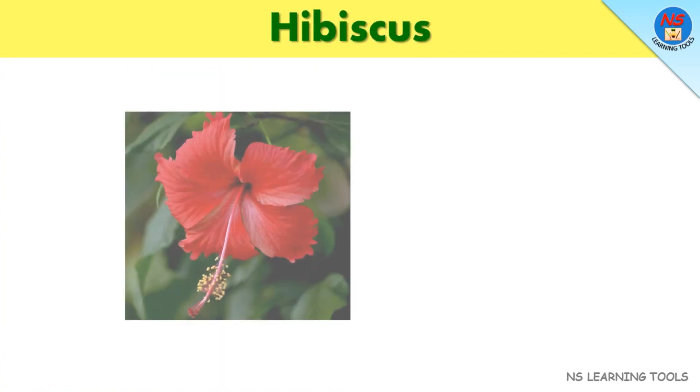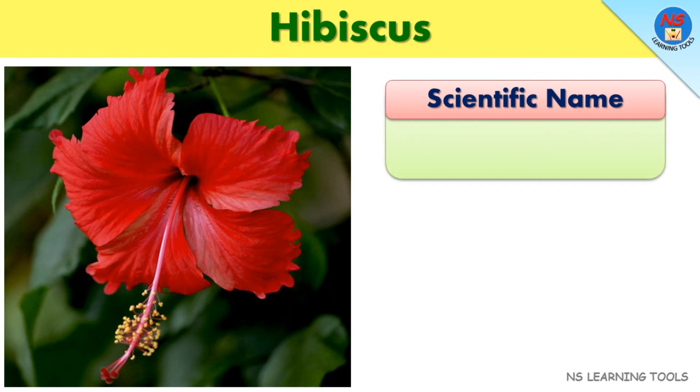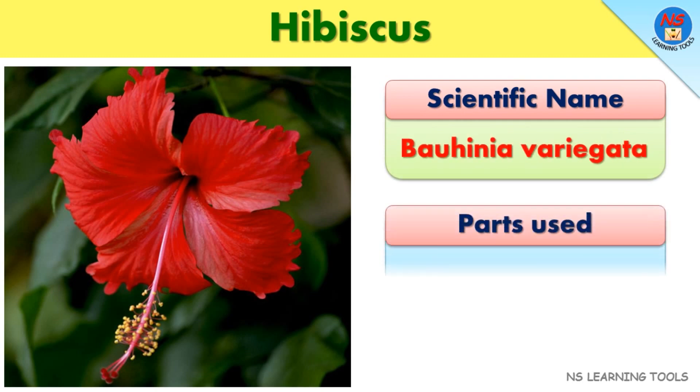Hibiscus. Scientific name. Violet leaves. Scientific name: Vauhenia variegata. Parts used.